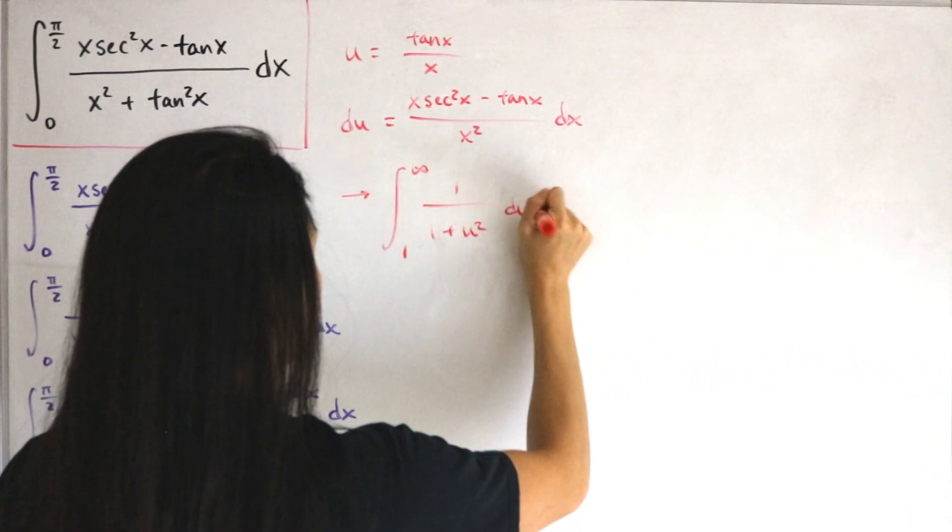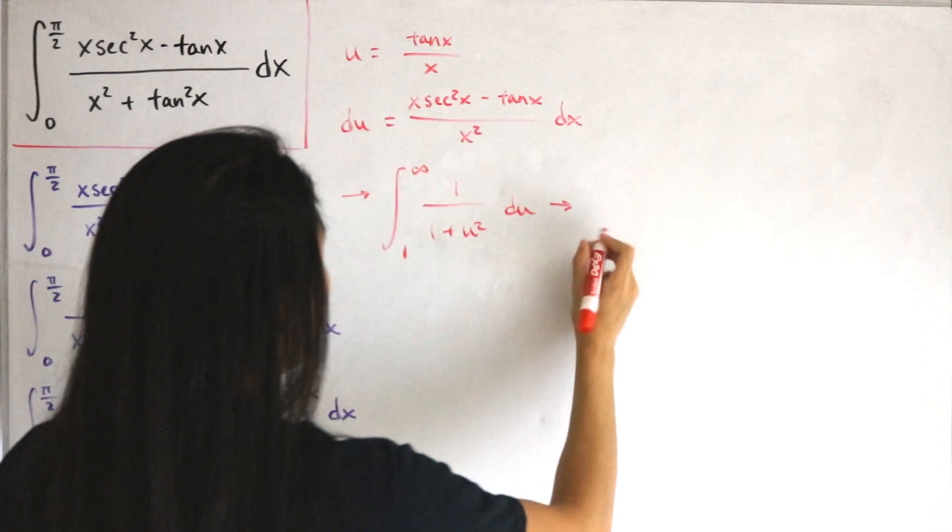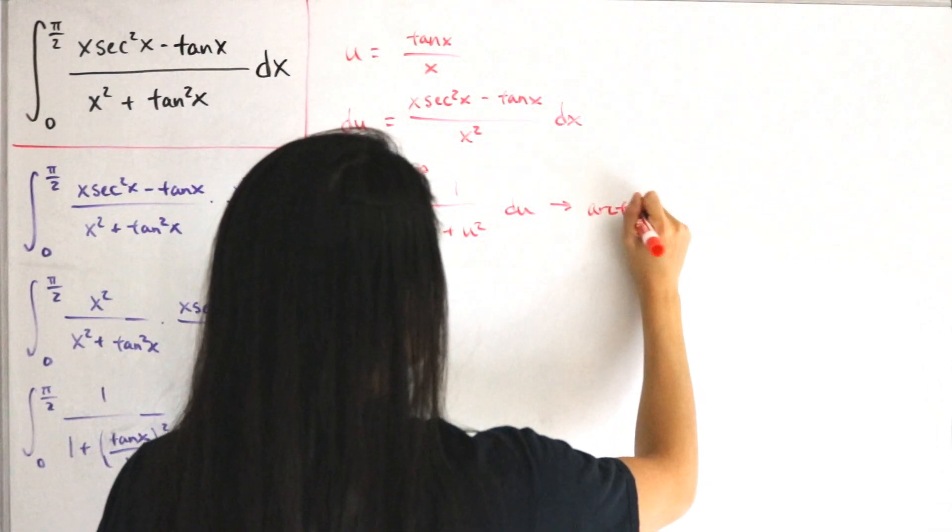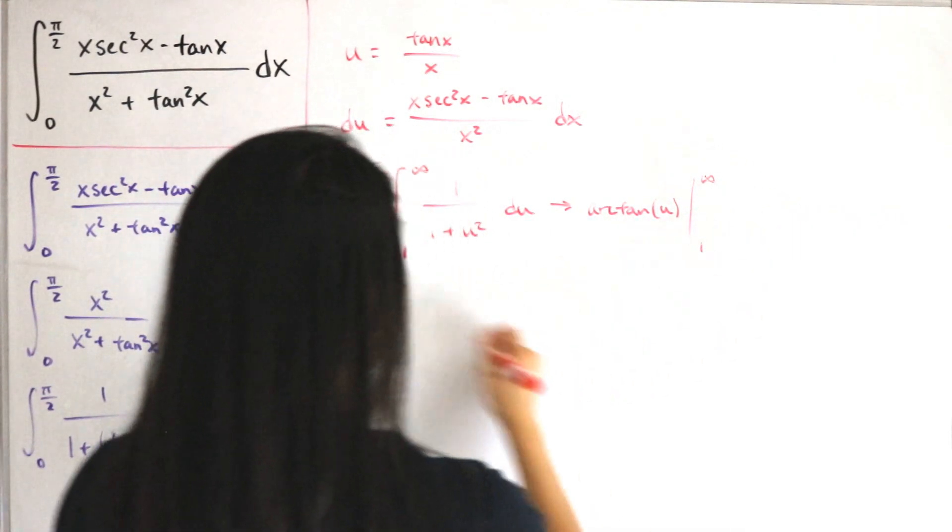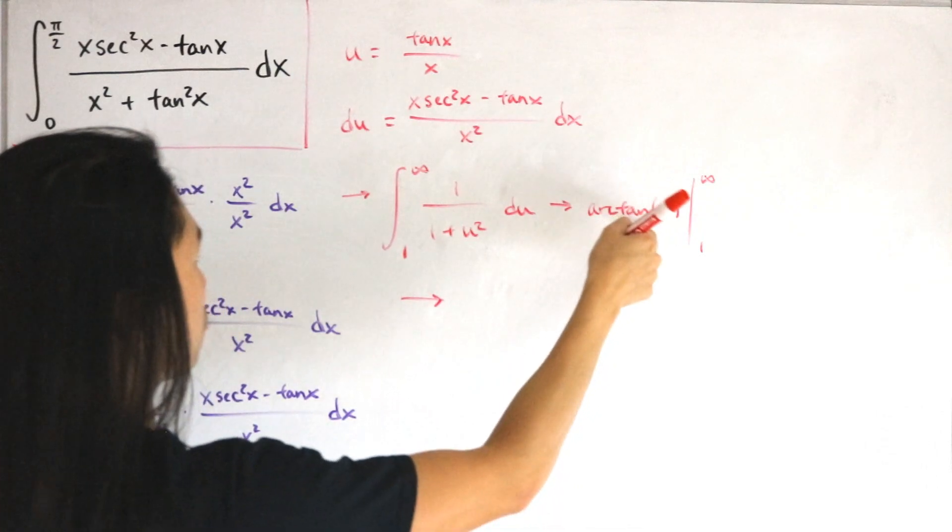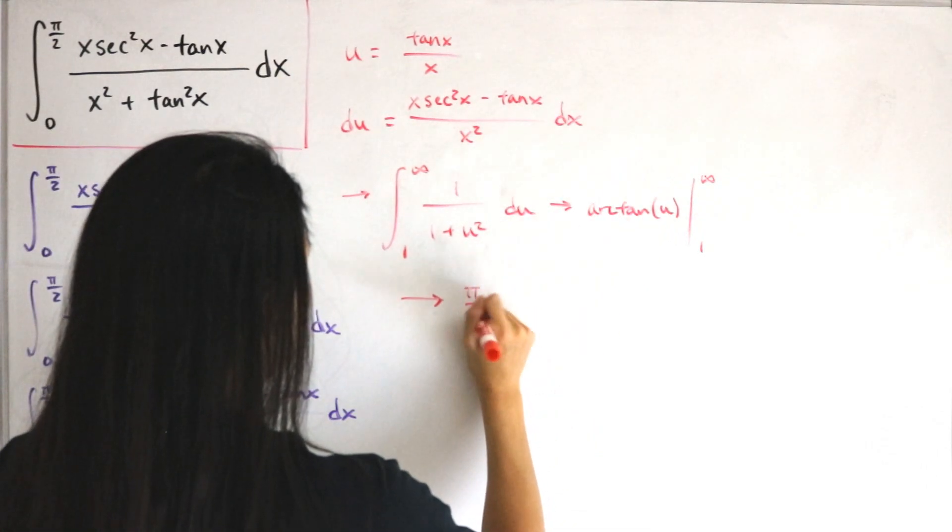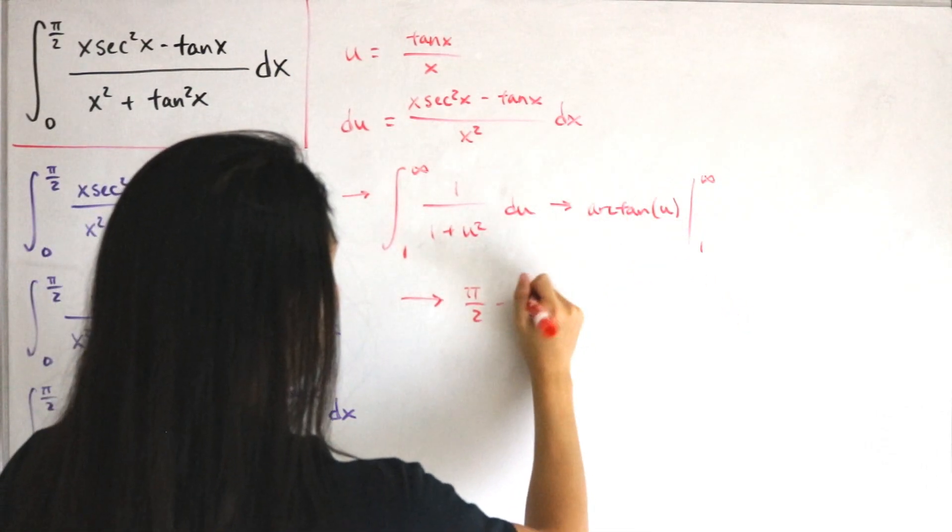This is simply the inverse tangent of u, and we evaluate this from our bounds from 1 to infinity. That means infinity plugged in gives π/2, then you plug in 1, you'll have π/4.